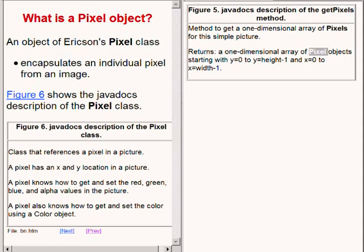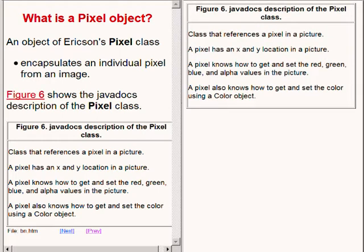So just what is a pixel object? Before I attempt to answer that question let me back up a bit and pose another question. What is a pixel? The word pixel spelled p-i-x-e-l is an abbreviation for the term picture element.